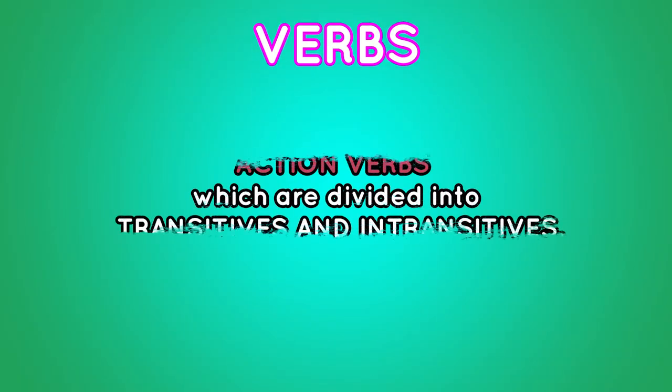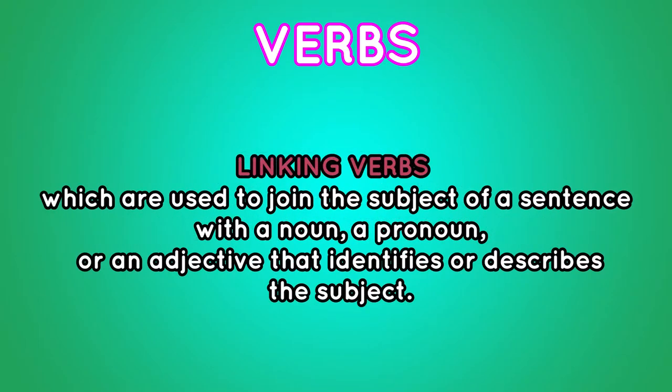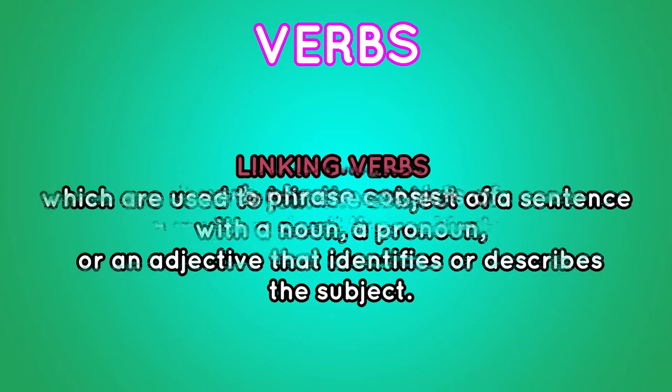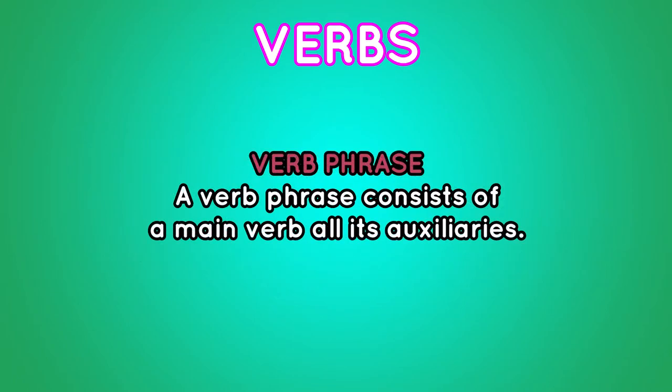Now let's move to verbs. What is a verb? A verb is a word that expresses action or state of being. Verbs are necessary to make complete sentences. There are different types of verbs: action verbs, which are divided into transitive and intransitive, and linking verbs, which are used to join the subject of a sentence with a noun or an adjective that identifies or describes the subject. Also, verbs can be formed by more than one word — this is called a verb phrase. The words that accompany a verb are called auxiliaries, and a verb phrase consists of a main verb and all its auxiliaries.